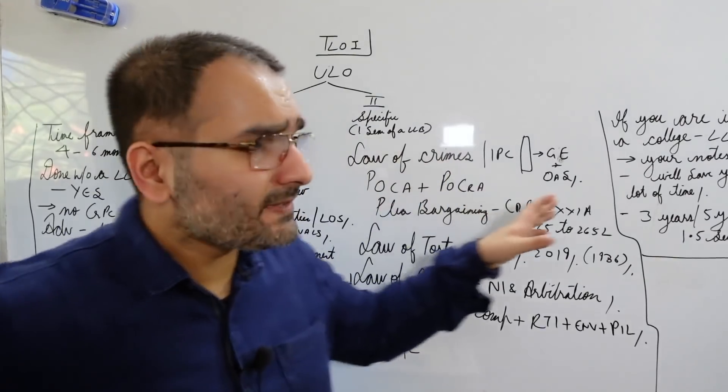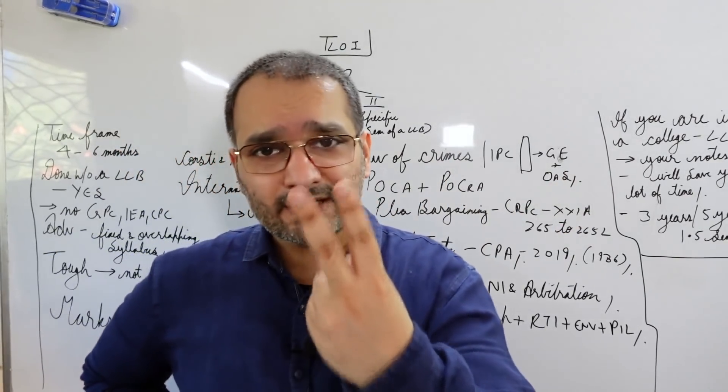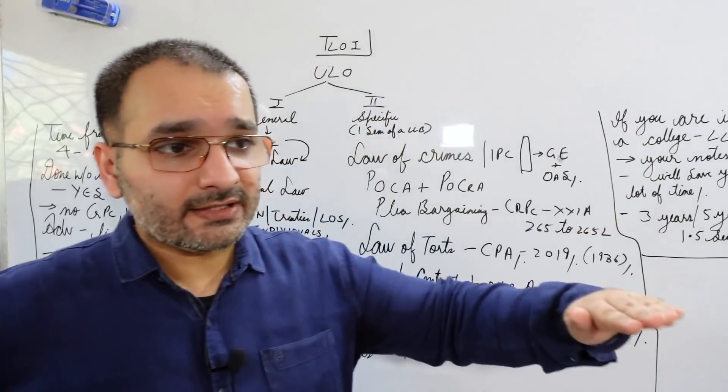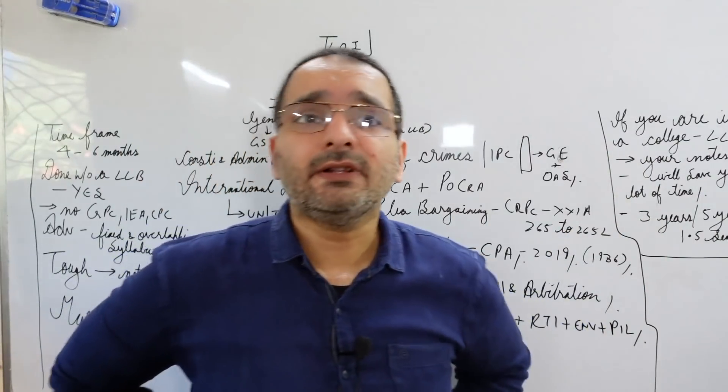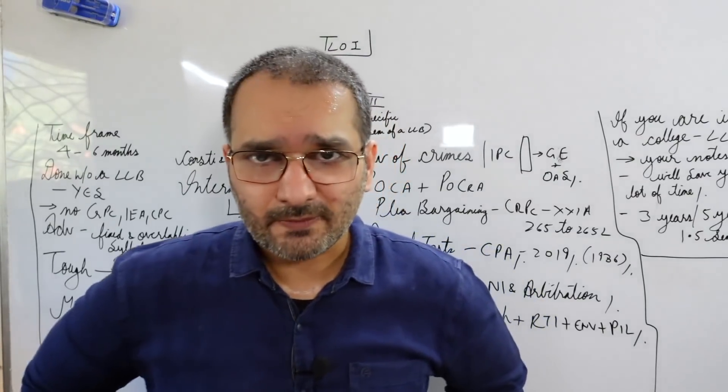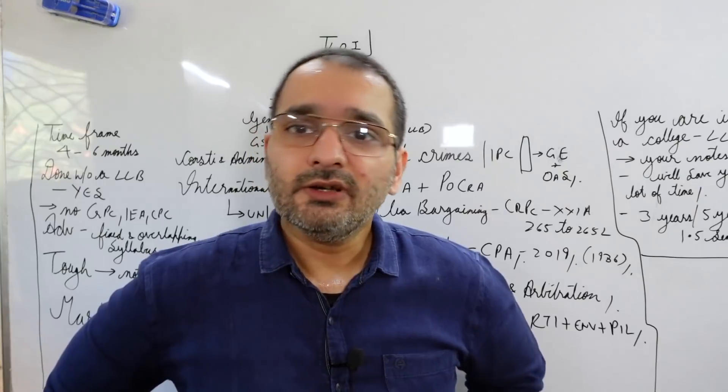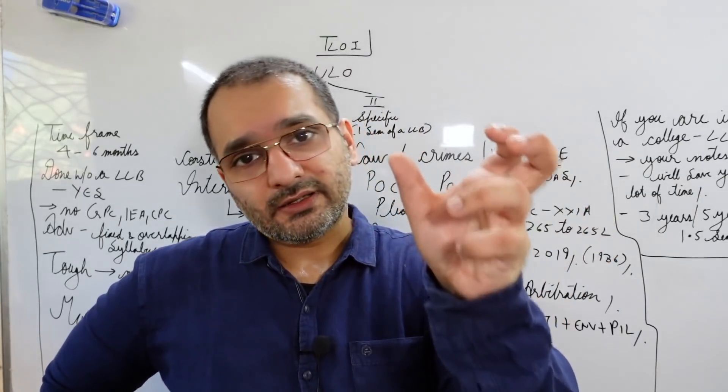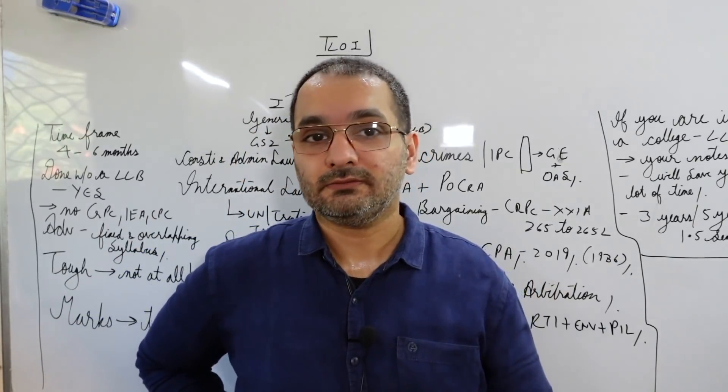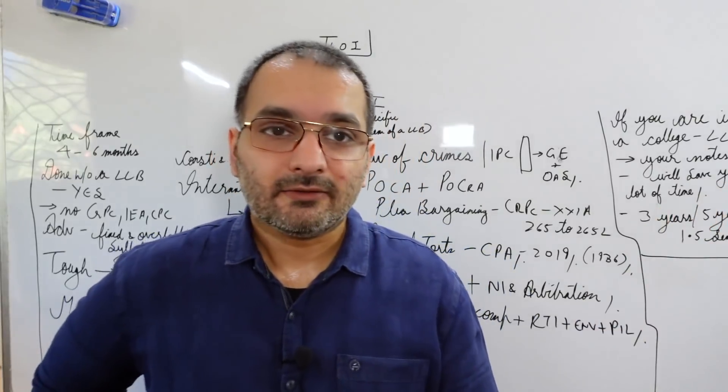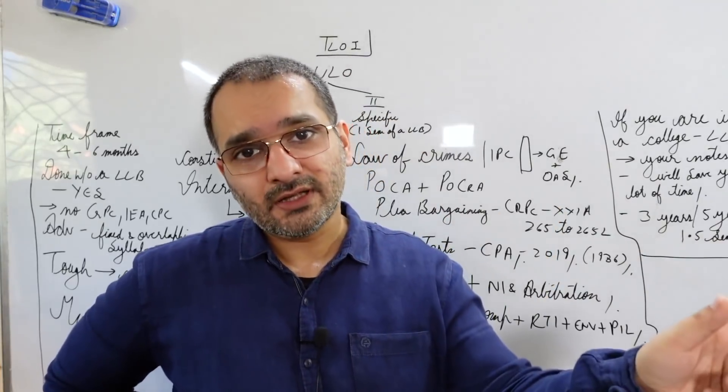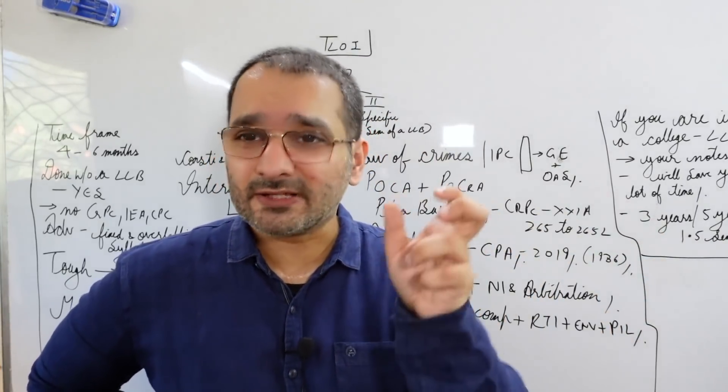You need to understand this. Now law of crimes, IPC - there is going to be two main areas that you need to understand from the IPC: that is general exceptions. A lot of things are not offenses. For example, let's take the doctrine of Dohni Incapax, that is section 82 of the IPC if I'm not mistaken. So under 82, no offense or rather anything done by a child less than seven years of age is not an offense. But why do you think that must be the case? That relates to mens rea and formation of intention, that relates to child psychology that we are presuming, the lawmakers presuming.